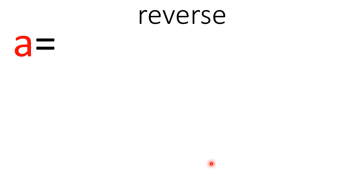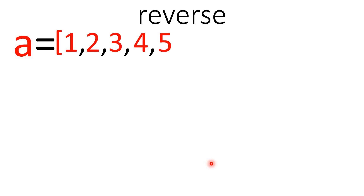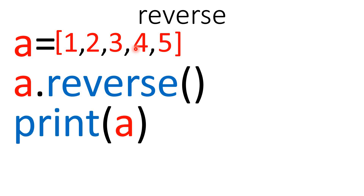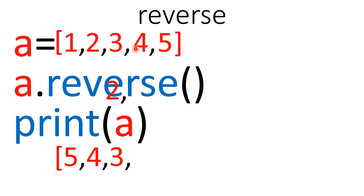For example, you have created a list saved in container a, with numbers from 1 to 5. If you want to reverse the sequence of numbers, you use the method reverse. Type the name of the object — a — then dot reverse and a pair of parentheses: a dot reverse. As soon as you hit enter, the object a is modified and the sequence of numbers is reversed. Then print a and you will see the reversed sequence.